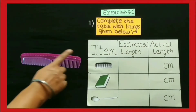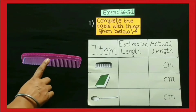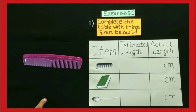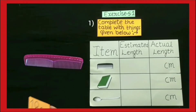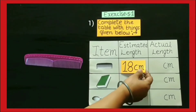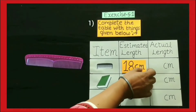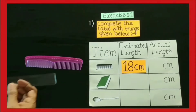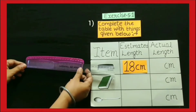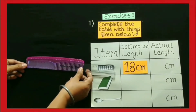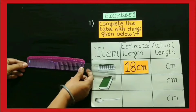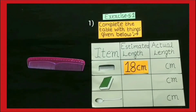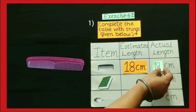The first thing is comb. Observe this comb and estimate its length. Its estimated length can be approximately 18 cm. To find out the actual length of the comb, we have to measure the comb with the help of the scale. Its actual length is 19 cm.